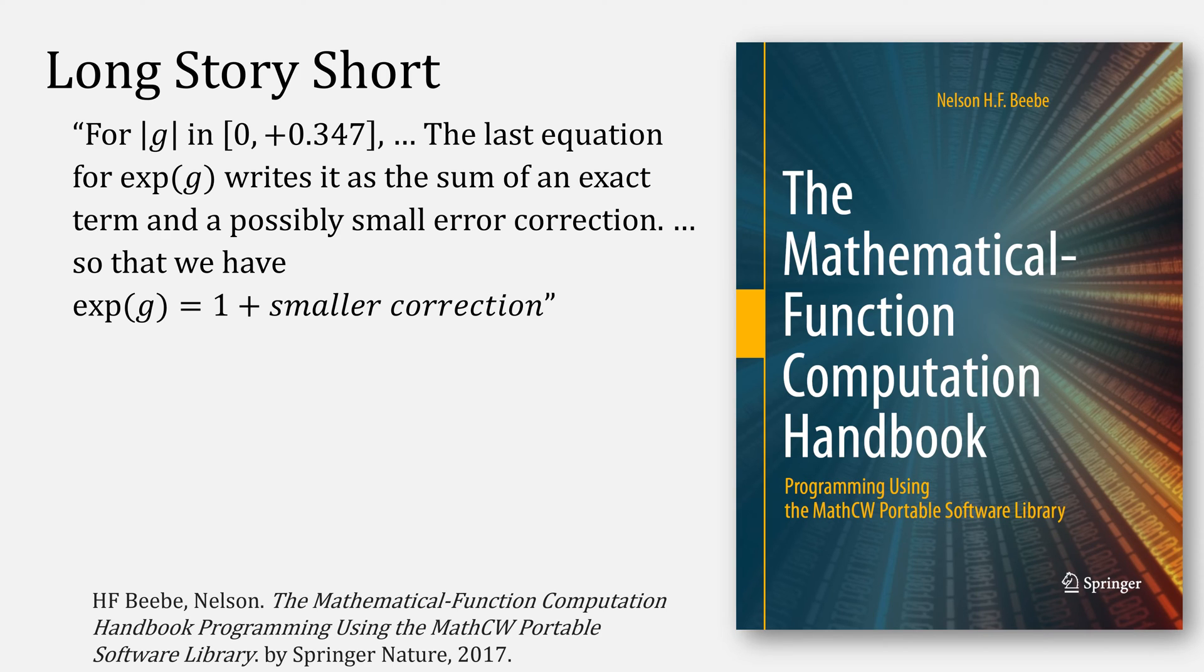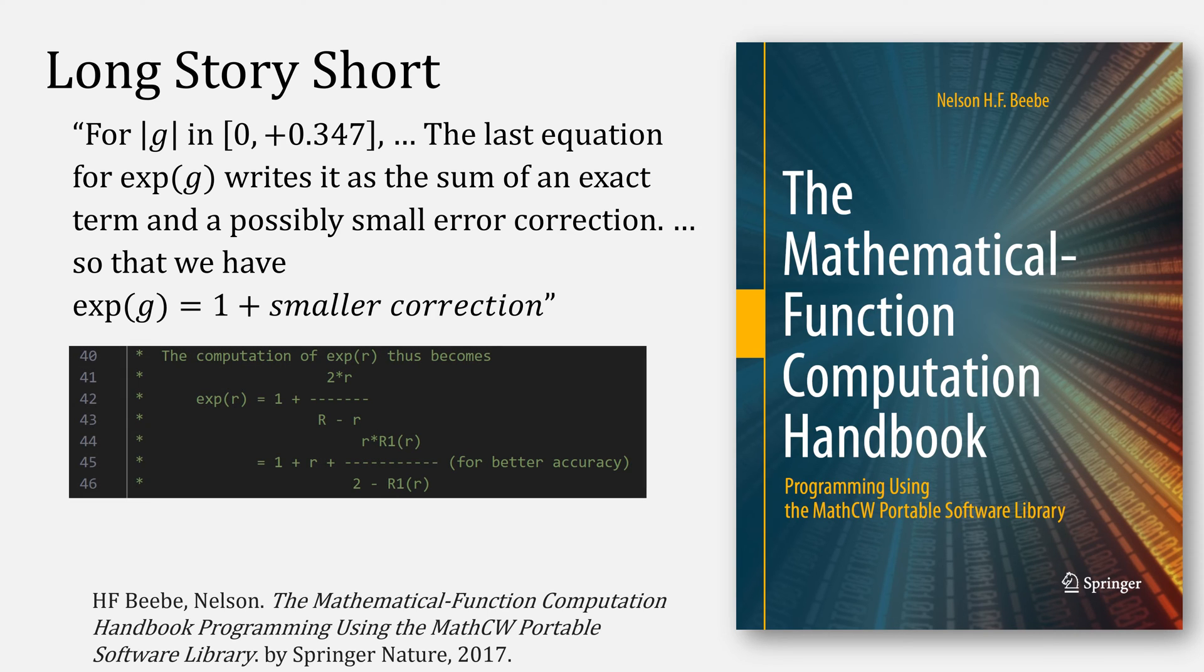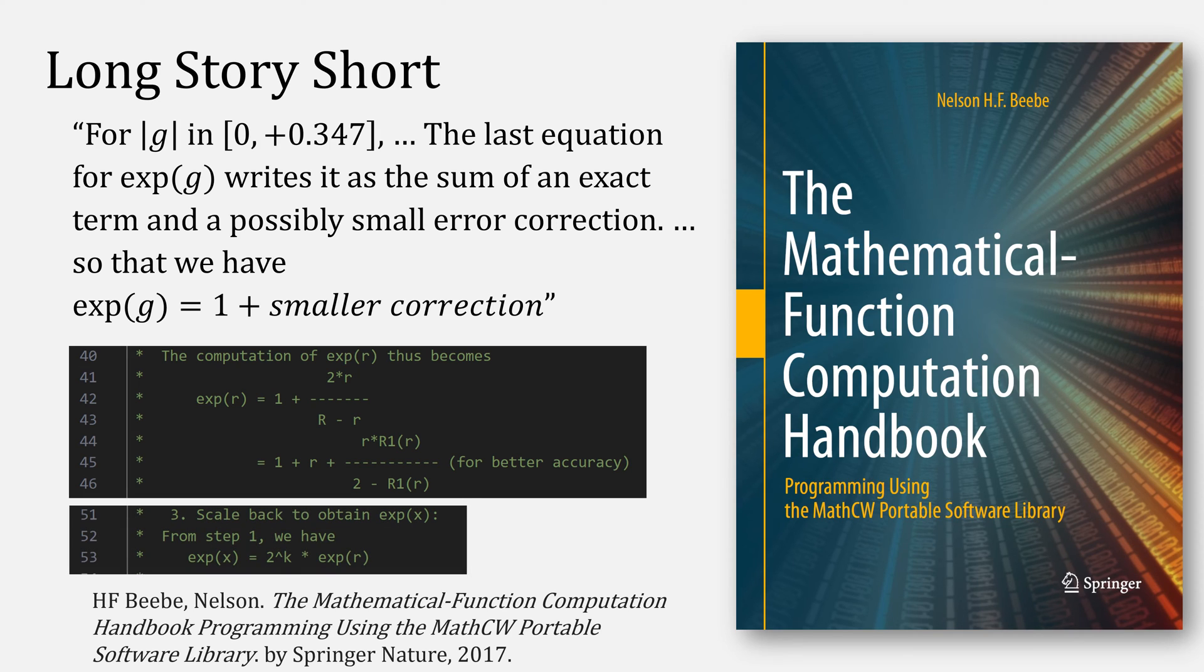To make a long story short, what we're really doing is finding exp of g, or in this case of our code exp of r, and computing that very accurately as one plus some small error correction using that expression. Then, using what we know about base 2, we can plug our exp of r against that and compute our exp of x, the number that we were originally looking for.